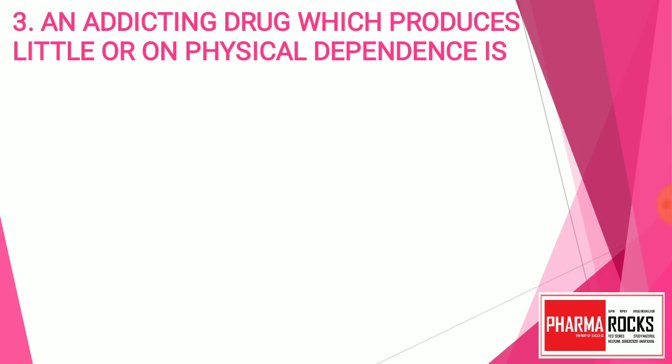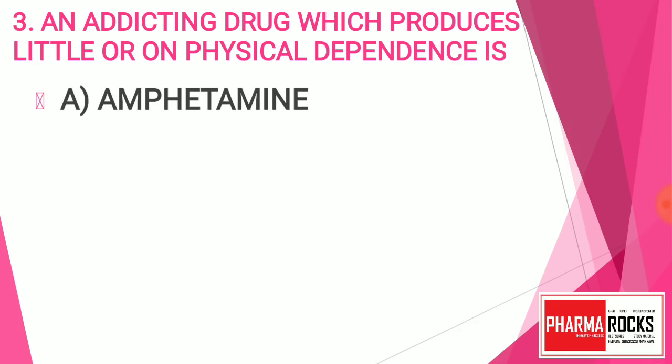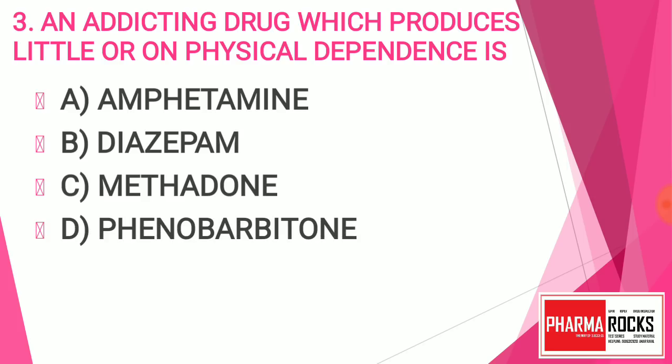Question number three: An addiction drug that produces little or no physical dependence is — Option A: Amphetamine, Option B: Diazepam, Option C: Methadone, Option D: Phenobarbitone. You have to find out the drug which causes addiction with little physical dependence.